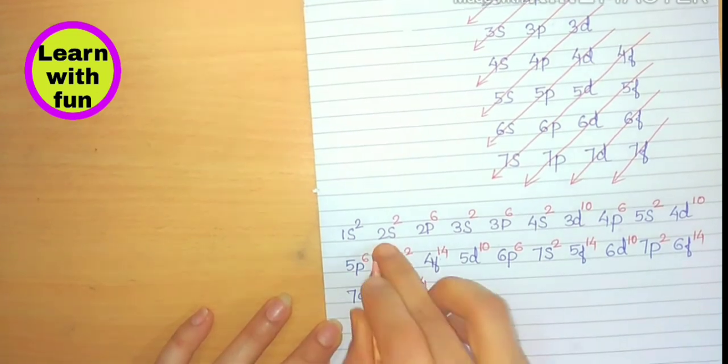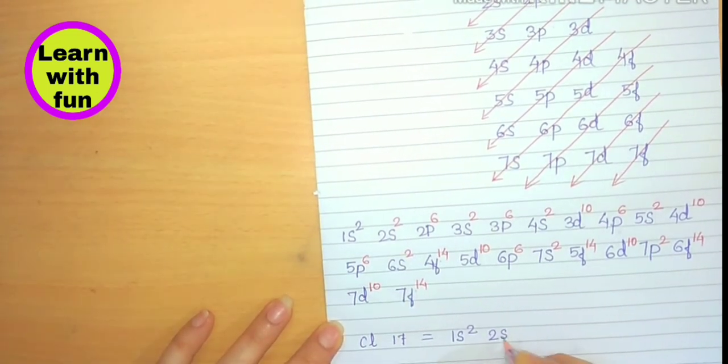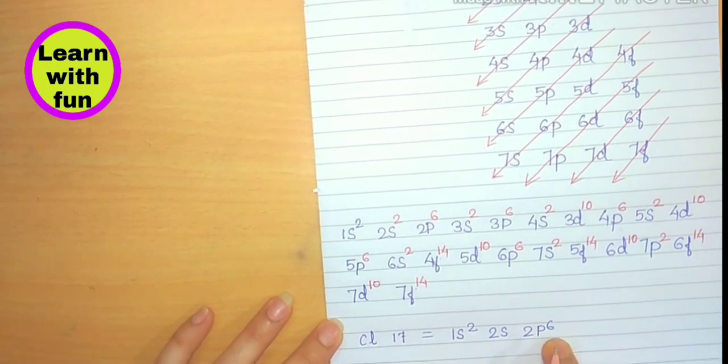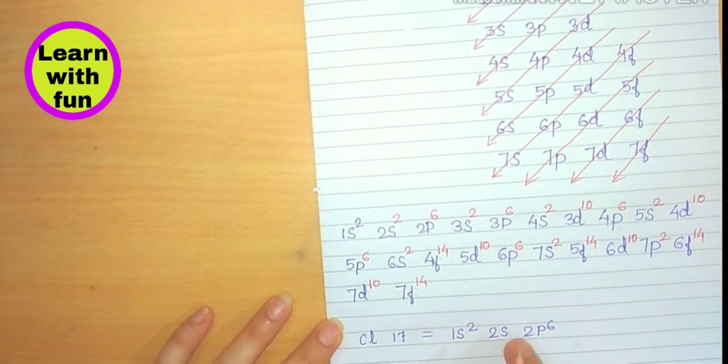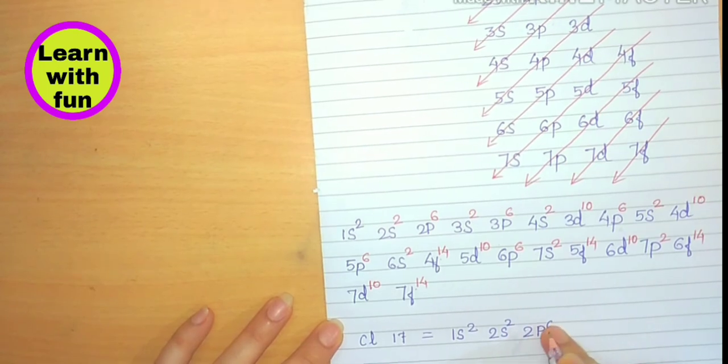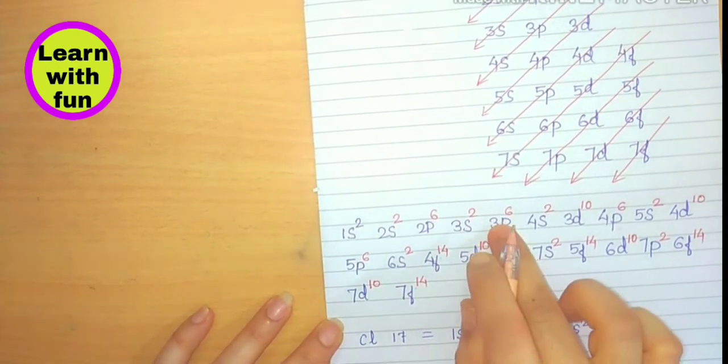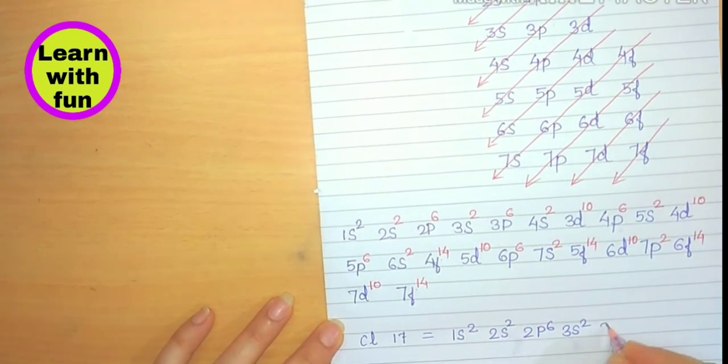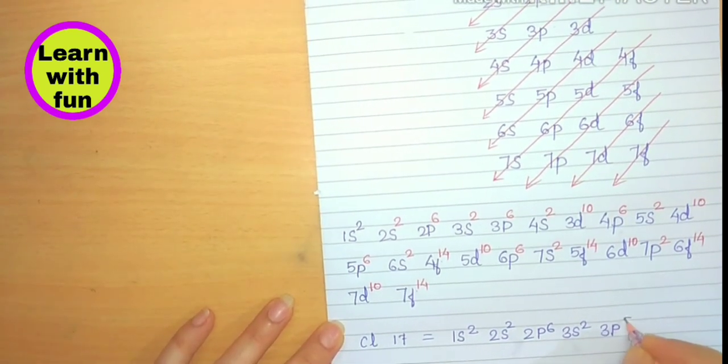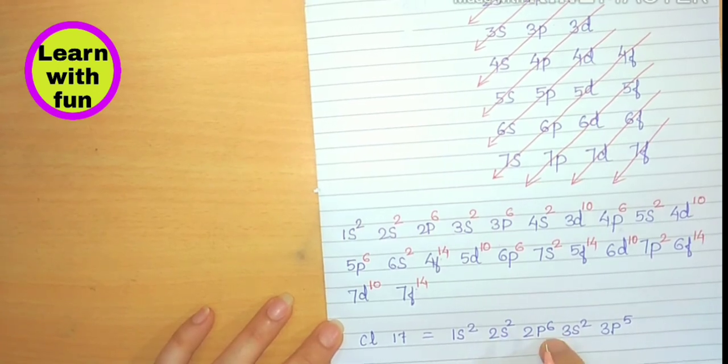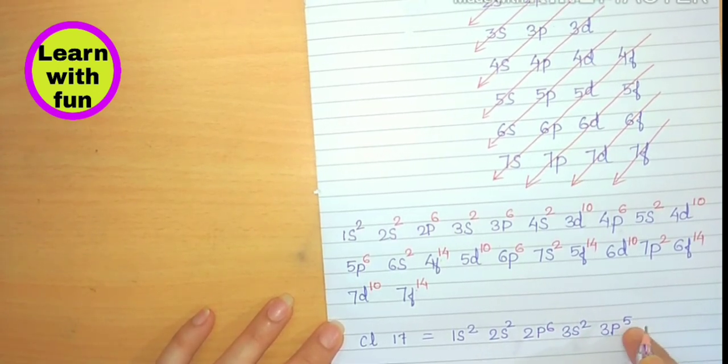1S2, 2S2, 2P6. How many electrons are there? 10: 2, 2, 6, 10. Now 3S2, 3P5. 2, 2, 4, 4 plus 6 is 10, 12, and 12 plus 5 is 17.